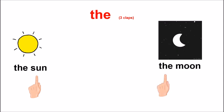We use the for the sun. Read the sentence. The sun. And we also use the for the moon. Read it. The moon. We use the for sun and moon. Because they are only one.